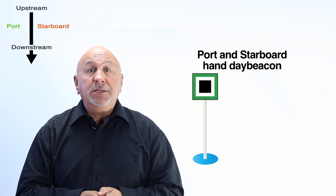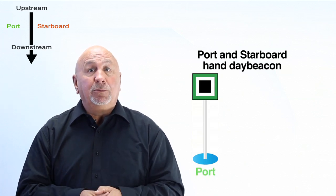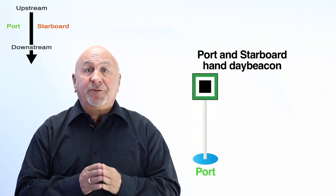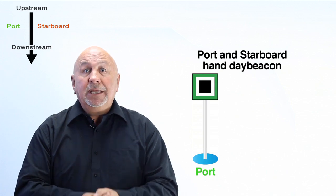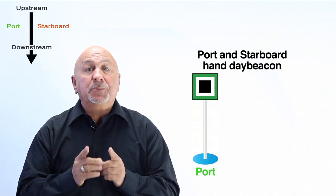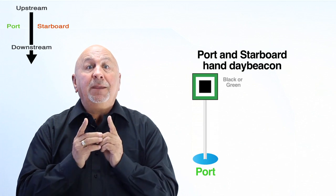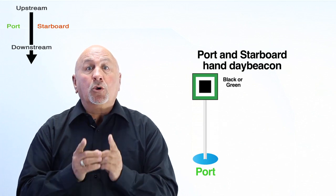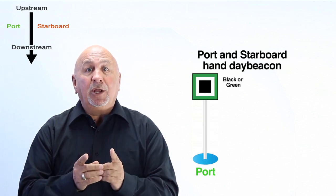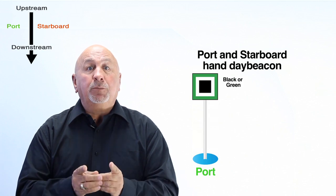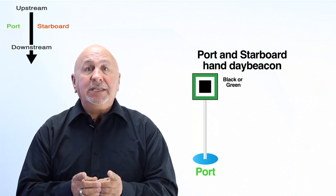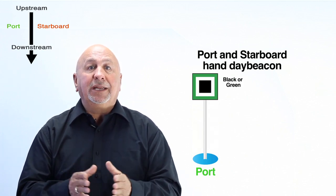Port hand day beacon is similar to a port hand lateral buoy. It points out the left side of a preferred channel and must be on the left when the craft is going upstream. It is a black or green square centered on a white background with a green reflective border. It has no lights and is visible only during daylight.